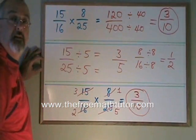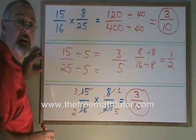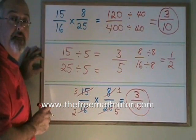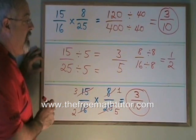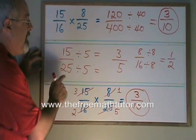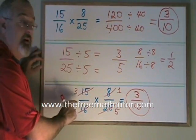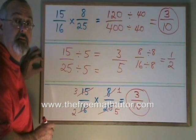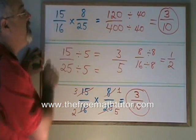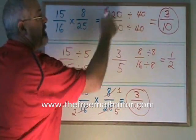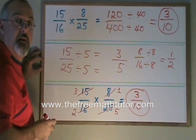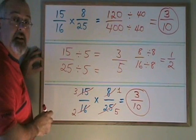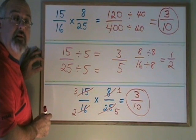I have 3/10. It's the right answer. It's the same answer I got when I did it the other way. The good thing about canceling is that if you can do it successfully, you end up with an answer that is already reduced to lowest terms. If you multiply without canceling, you have this extra step of reducing the fraction before you have given your final answer. This is how canceling works.